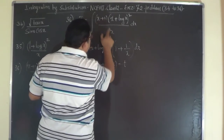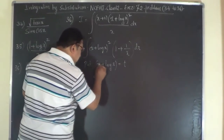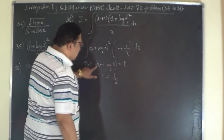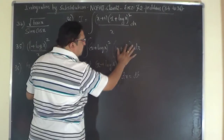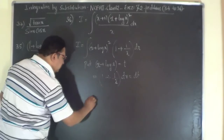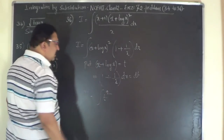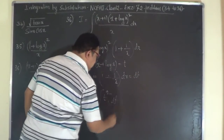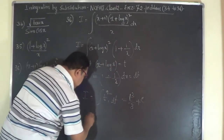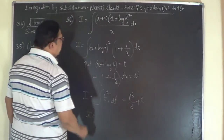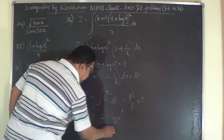Now substitute x plus log x equals t. The differential coefficient of x is 1, and of log x is 1 by x, so 1 plus 1 by x dx equals dt. The problem becomes i equals the integral of t squared dt, since x plus log x whole square is t squared. Integrating gives t cubed by 3 plus c. Therefore i equals (x + log x)³ divided by 3 plus c.